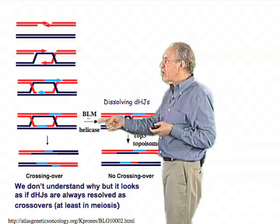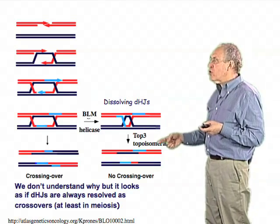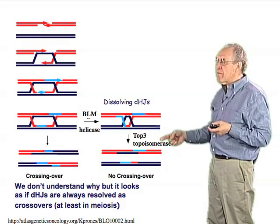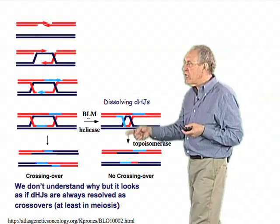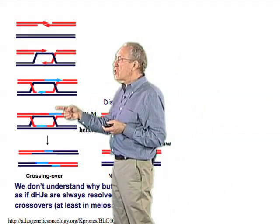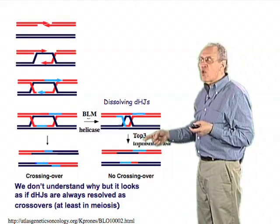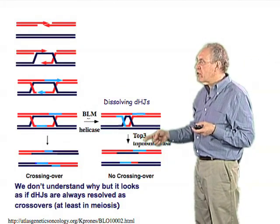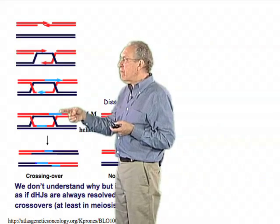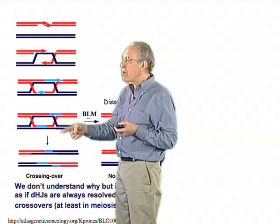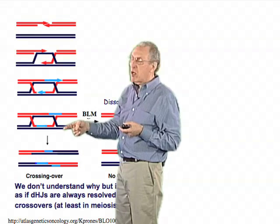When this process occurs in this way, one ends up resolving the molecule in a way that can never result in a crossing over. The presence of Bloom's helicase and topoisomerase III takes this double Holliday junction structure and assures that it will generate non-crossover but repaired DNA molecules, whereas double Holliday junctions that remain can be acted upon by Holliday junction resolvases and end up as crossovers.